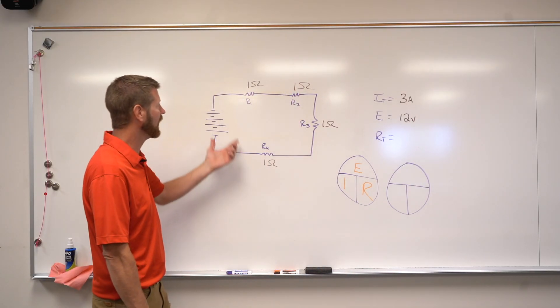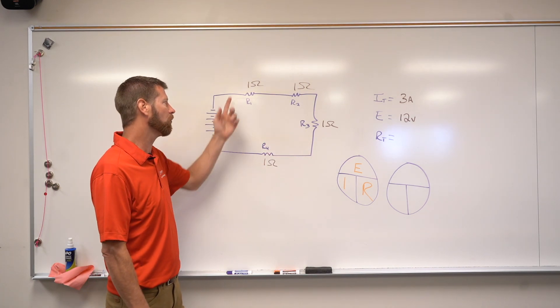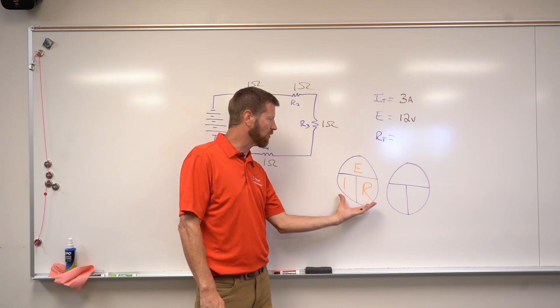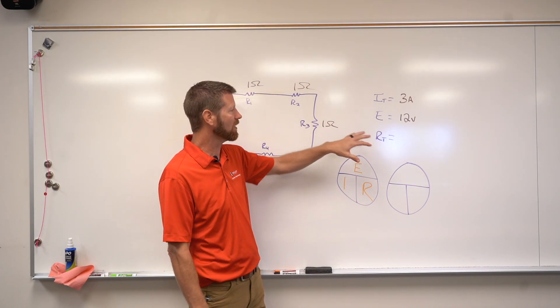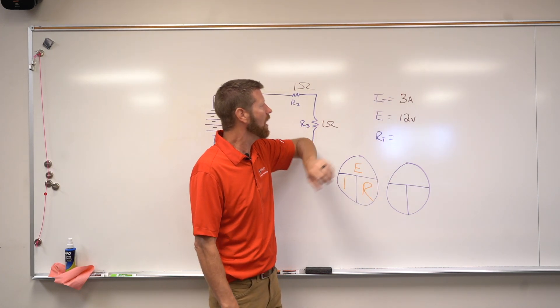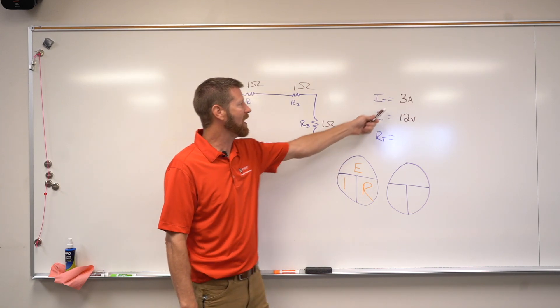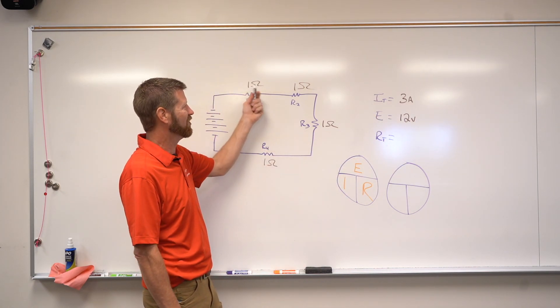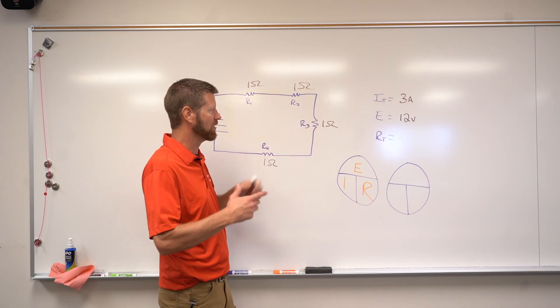Alright, so here we have a basic circuit with four resistors. All the resistors happen to be the same value. Again, this is Ohm's Law, E over I times R. So we're just going to take those values that are already known. We have 3 amps, we have 12 volts, and the resistance total is just a matter of adding up all of these resistors together.